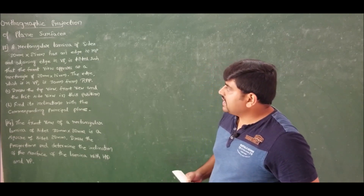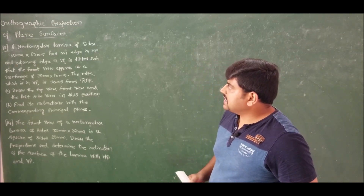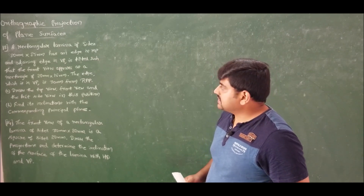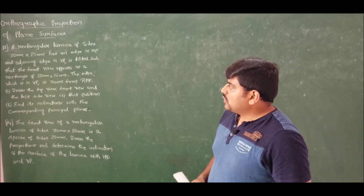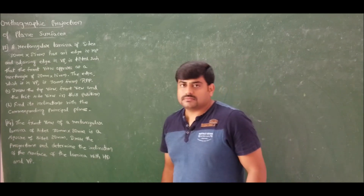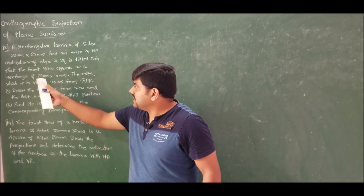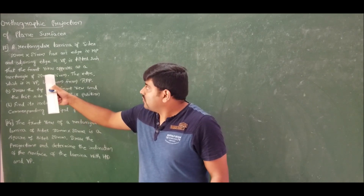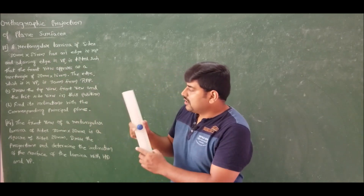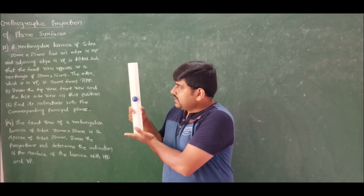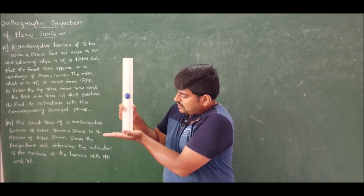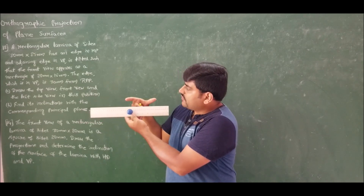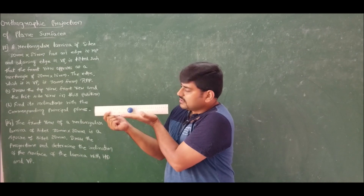There is a rectangular lamina of sides 20 mm × 25 mm with an edge in HP and the adjoining edge in VP. It is tilted such that the front view appears as a rectangle of 20 mm × 15 mm. So the lamina is resting on the vertical plane. We have the 20 mm × 25 mm rectangular lamina resting on the vertical plane.